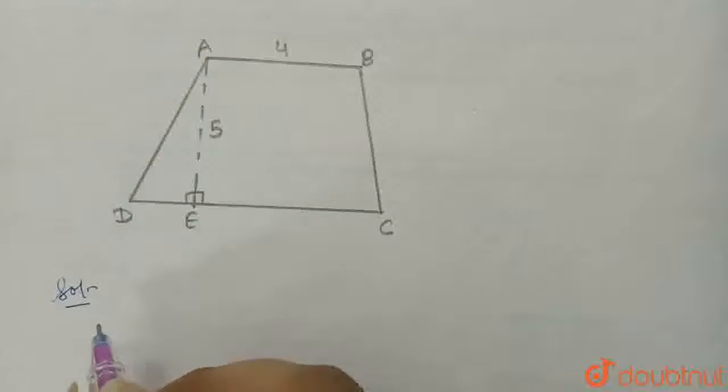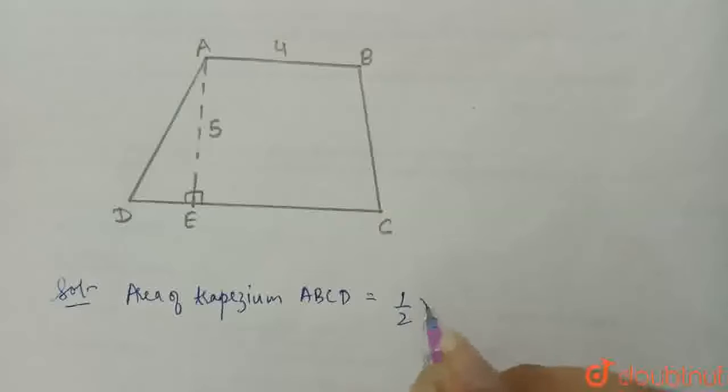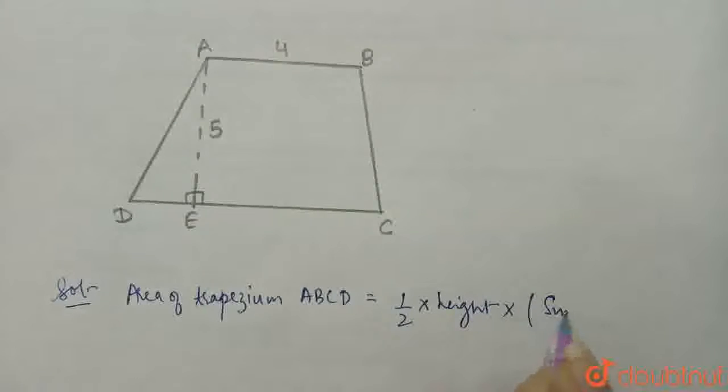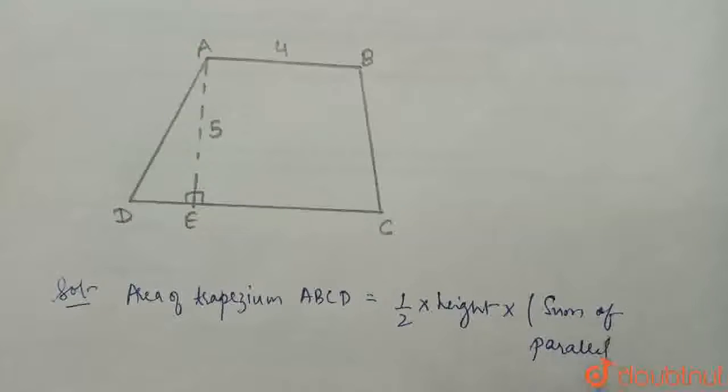We need to calculate the area of trapezium ABCD. The area of trapezium ABCD equals half times the height times the sum of parallel sides.